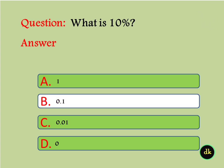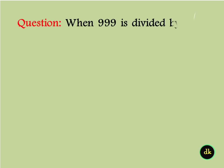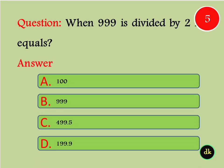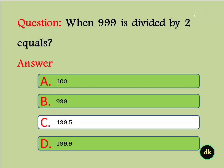Answer is 0.1. When 999 is divided by 2, it is equal to? Answer: 499.5.